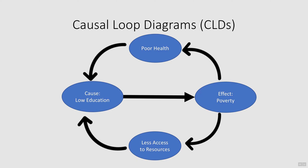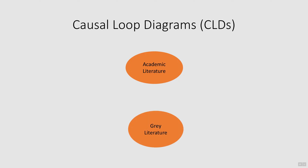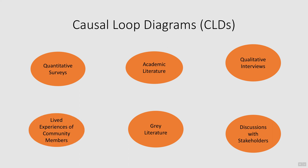Poverty also makes it more difficult to access resources that could aid in getting an education. This demonstrates a non-linear relationship with feedback loops that will, over time, further amplify the effect on poverty. These more complex models are more reflective of reality and allow us to account for more potential changes in the system, making for more informed policy decisions. The data used to create causal diagrams can come from a variety of sources, including academic literature, grey literature such as reports and policy documents, qualitative interviews with stakeholders, quantitative data from surveys, and the lived experience of community members.